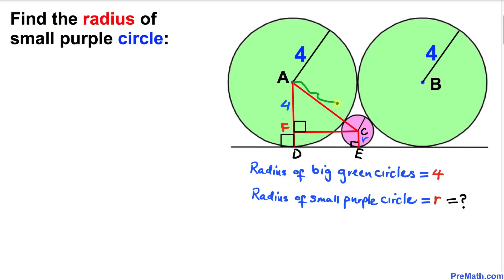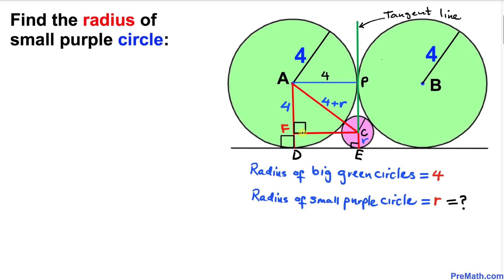Now let's focus on the radii. The radius of the big green circle is 4, and the radius of the small circle is lowercase r. So the length of AC is going to be 4 plus r.